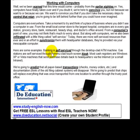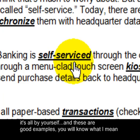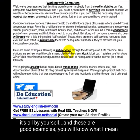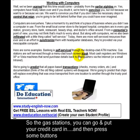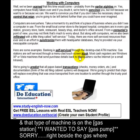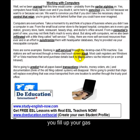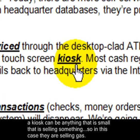Here are some examples. Banking is self-serviced through the desktop ATM machine. Self-service means you do it all by yourself with no help from a company. In North America, gas stations are self-serviced through a menu touchscreen kiosk — you put your credit card in, press some buttons, fill your tank up with gas, and drive away. That machine beside the gas pump is called a kiosk. A kiosk can be anything small that is selling something.